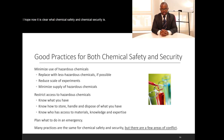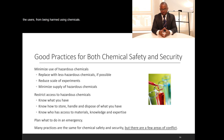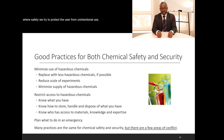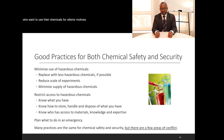Thank you very much. I hope it is now clear what chemical safety and chemical security are, what their aims are in terms of protecting the environment and users from being harmed by chemicals. The first approach — safety — tries to protect the user from unintentional harm, and the second approach — security — tries to protect our chemicals from being accessed by threats or persons who want to use chemicals for ulterior motives.